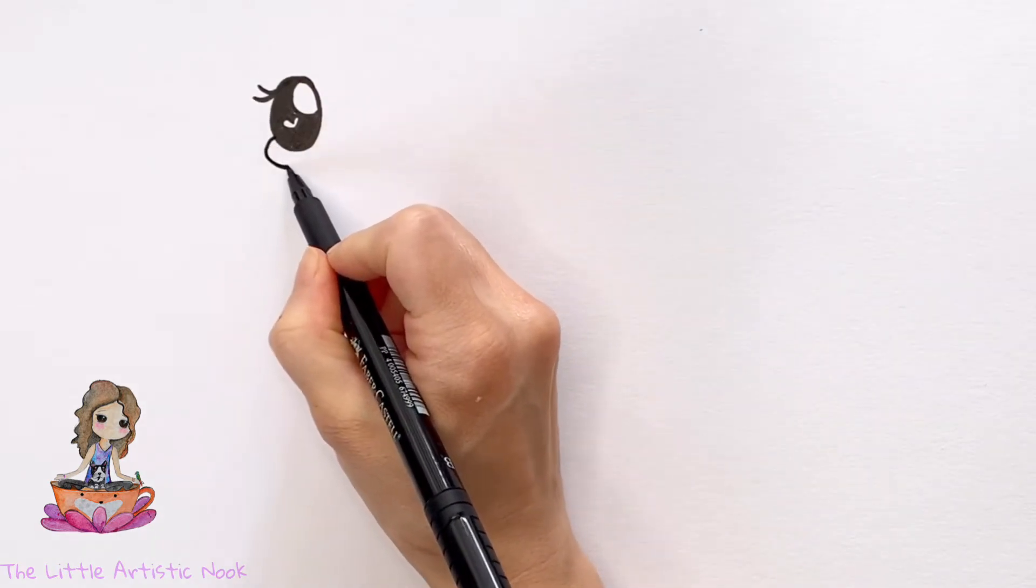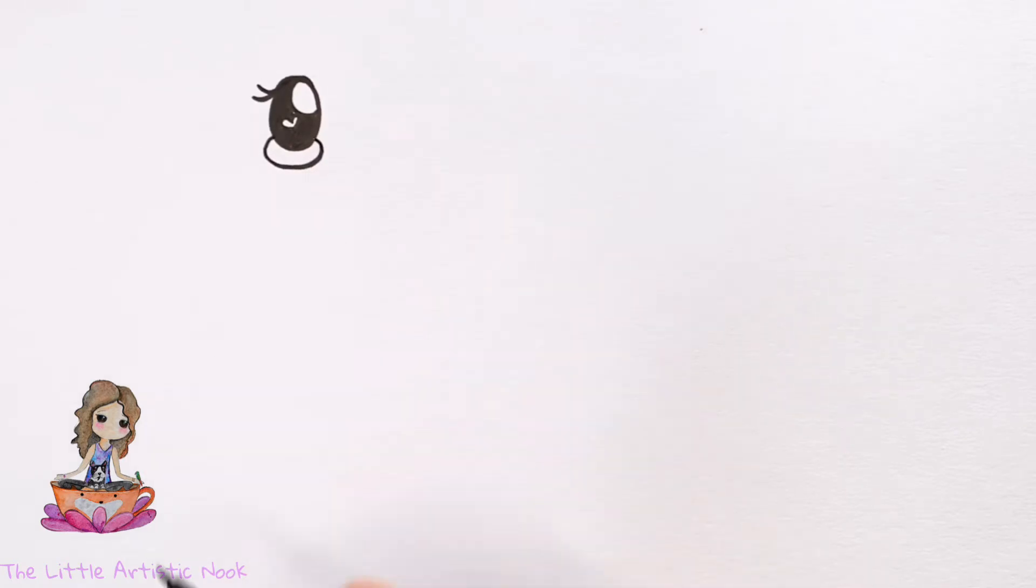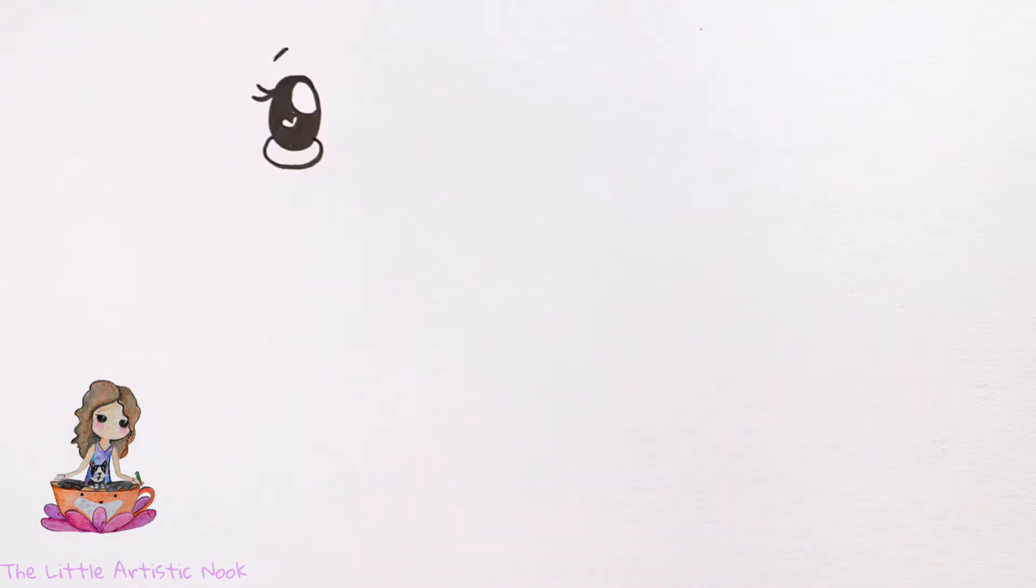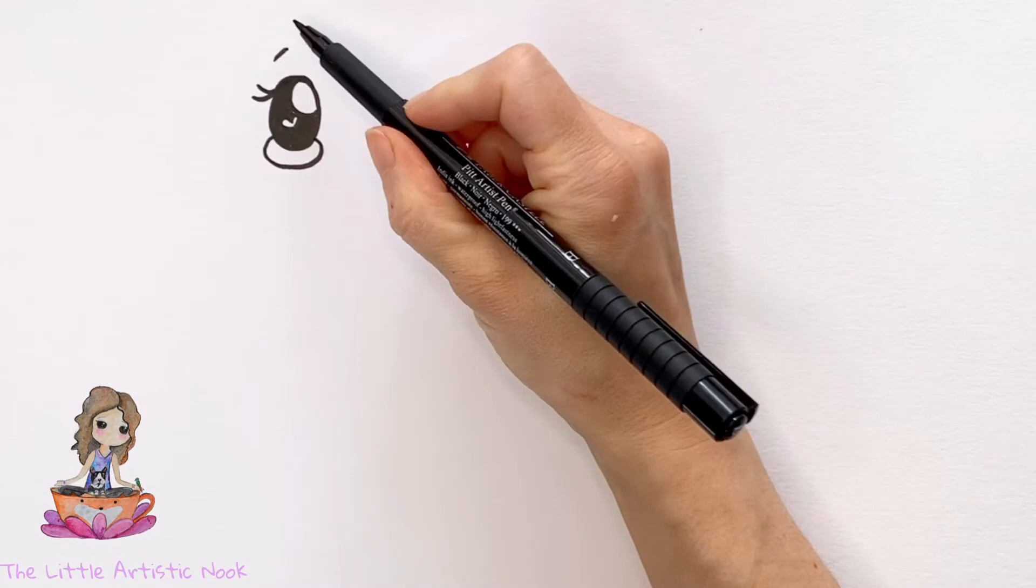Then I'm going to just draw a small eyebrow above the eye. To begin drawing the head, let's start by placing a dot above the eyebrow.